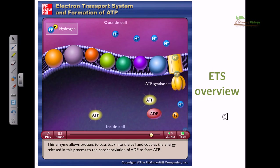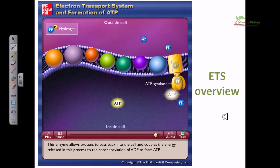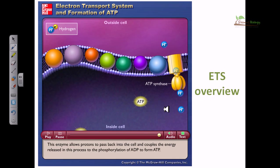The enzyme ATP synthase utilizes the energy of the proton motive force to synthesize ATP. This enzyme allows protons to pass back into the cell and couples the energy released in this process to the phosphorylation of ADP to form ATP. You have now seen a basic overview animation of how this process actually happens. To know this pathway in advanced detail, let's move on to the next slide.